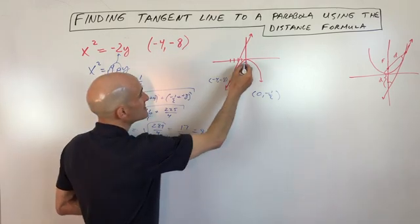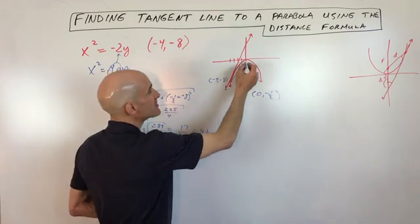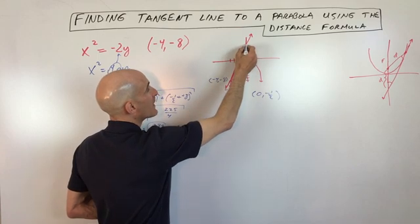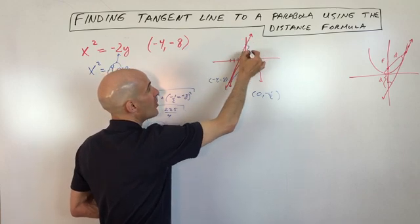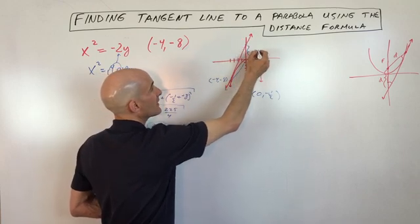So what that means is that this distance here is 8 and a half. The distance from the focus to the y-intercept that the tangent line crosses the y-axis over here, this distance is also going to be 8 and a half.